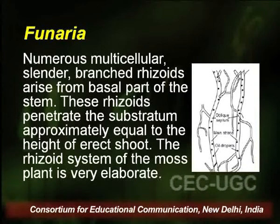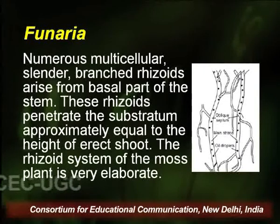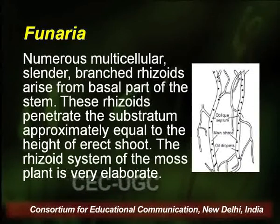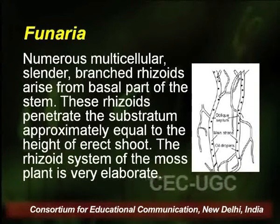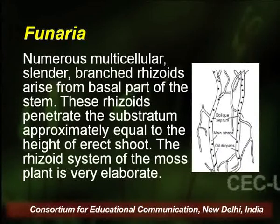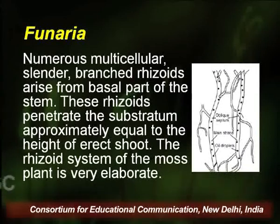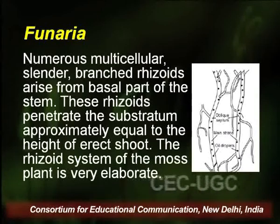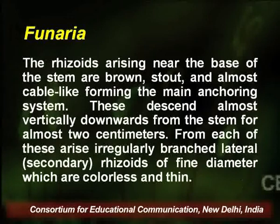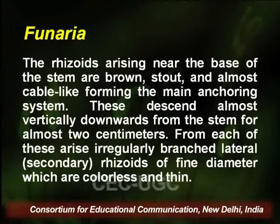Numerous multicellular slender branched rhizoids arise from the basal part of the stem. These rhizoids penetrate the substratum approximately equal to the height of the erect shoot, providing sufficient anchorage and support to the upright gametophyte. The rhizoid system of the moss plant is very elaborate and interconnected.